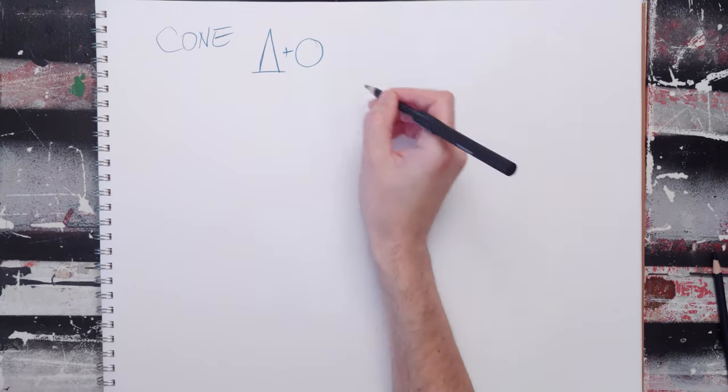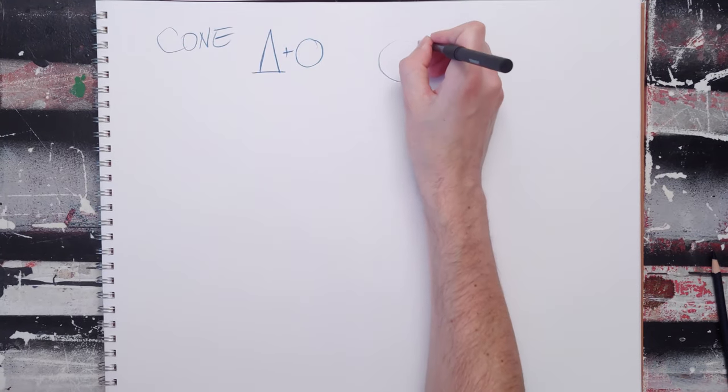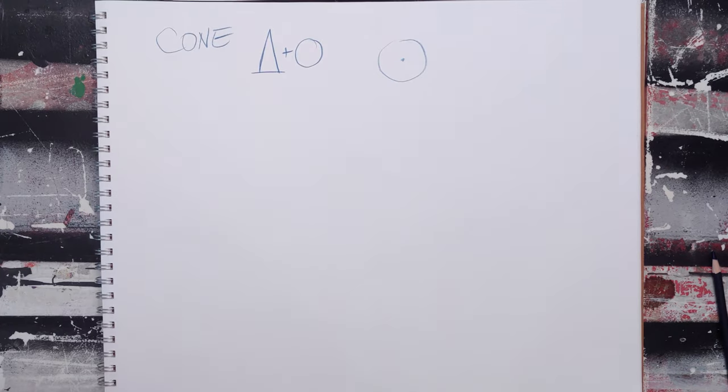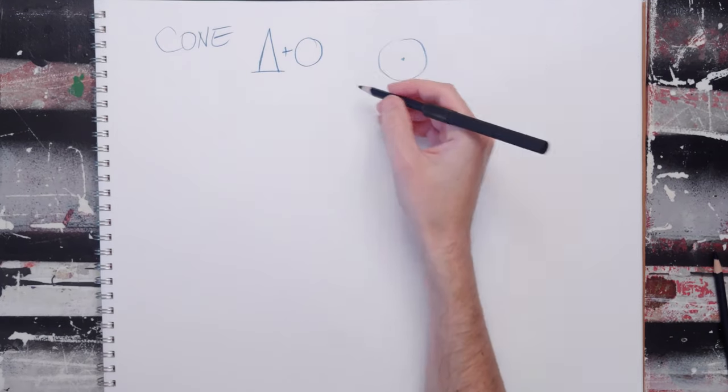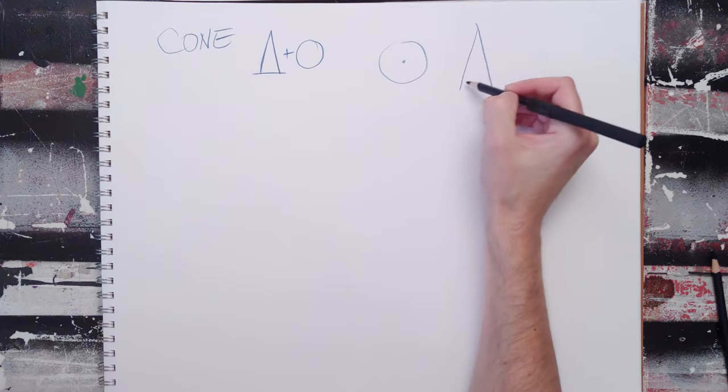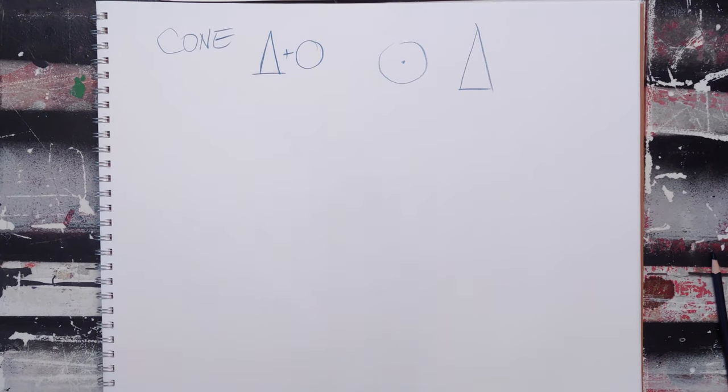When you look down on a cone, straight down on it, you see a circle with a little point. From the side, you see a triangle.